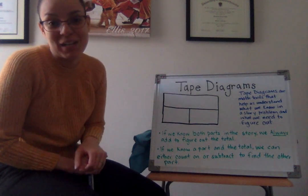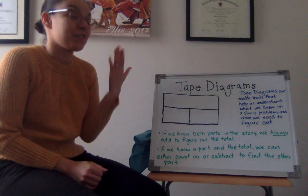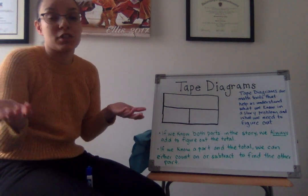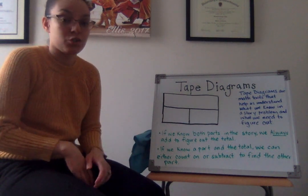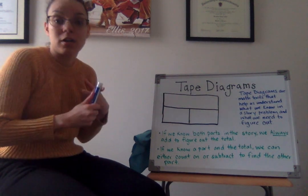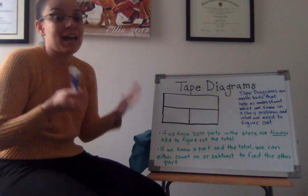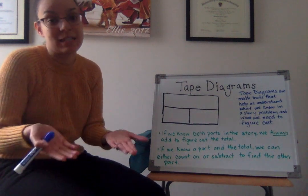Well, I'm here to tell you what it is. A tape diagram is a math tool that helps us to understand what parts of the stories we have based on the story problem. So it can tell us whether we have a part, it can tell us whether we have a total, whether we have two parts, and then that will help us figure out how we can attack the problem.